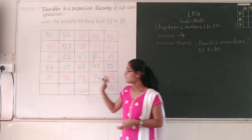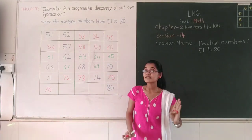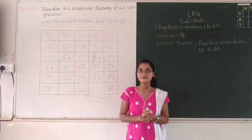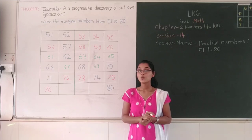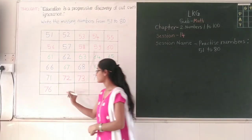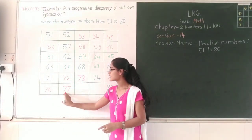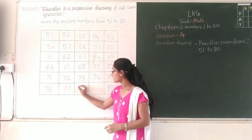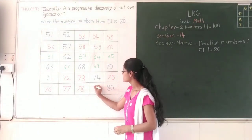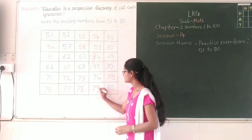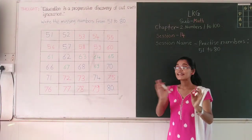After 75 — 76. 76. Now tell me, after 76, which number will come? 77. 77. And after 77, which number will come? 78. 78. Then 79. And last one is 80. Right?